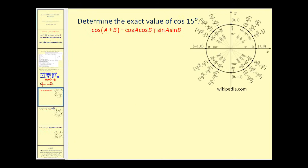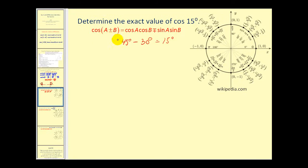Here we want to determine the exact value of cosine 15 degrees. Fifteen degrees is not one of those nice reference angles, but we can use a sum or difference of two angles that are reference angles to obtain 15 degrees. For example, if we use 45 degrees and subtract 30 degrees, that gives us 15 degrees. So we use angle a equal to 45 degrees and angle b equal to 30 degrees.